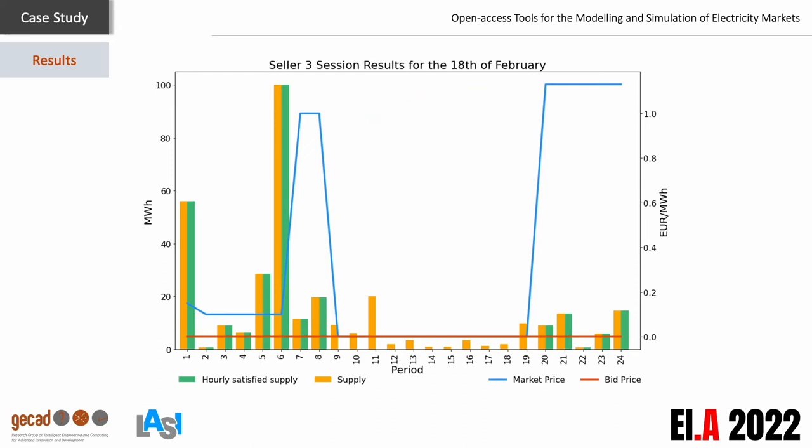Following are the session results of seller 3. This player submitted bids for all trading periods. However, he could only sell his supply in 13 periods out of 24. This means the prices offered in his bids from period 9 to period 19 were a bit higher than the market price, which was zero in those periods. In the remaining periods, this player was able to sell all of his supply.